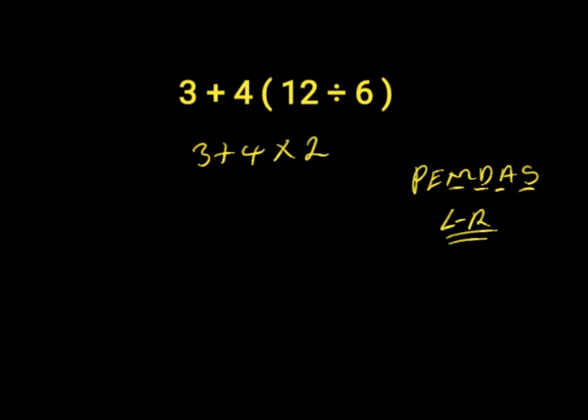4 times 2 will give us 8. Then we have 3 plus 8. 3 plus 8 is equal to 11. 11 is the right answer to this question.